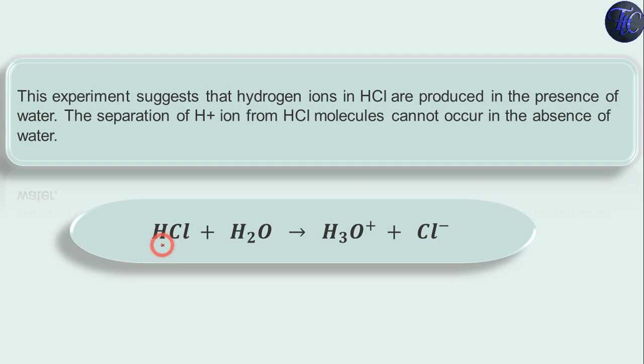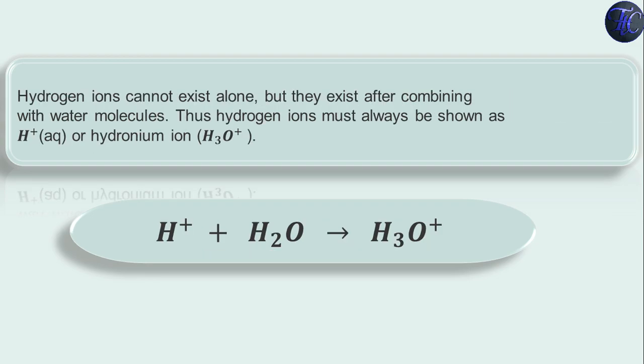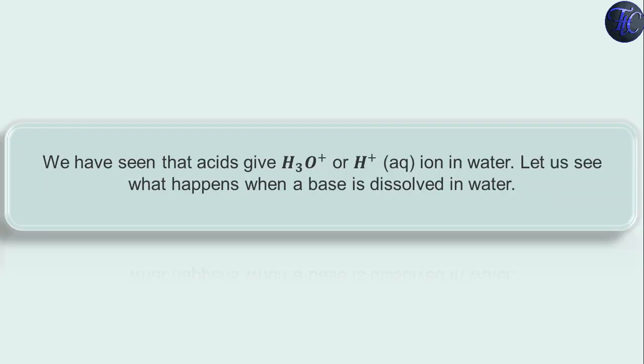The reaction can be written as HCl plus H2O will give us H3O+ and Cl- ions. Now hydrogen ions cannot exist alone, but they exist after combining with water molecules. Thus hydrogen ions must always be shown as H+ aqueous or hydronium ion that is H3O+. As I told, hydrogen ion cannot exist alone. H+ will combine with H2O and it will produce H3O+. We have seen that acids give H3O+ or H+ ions in water.